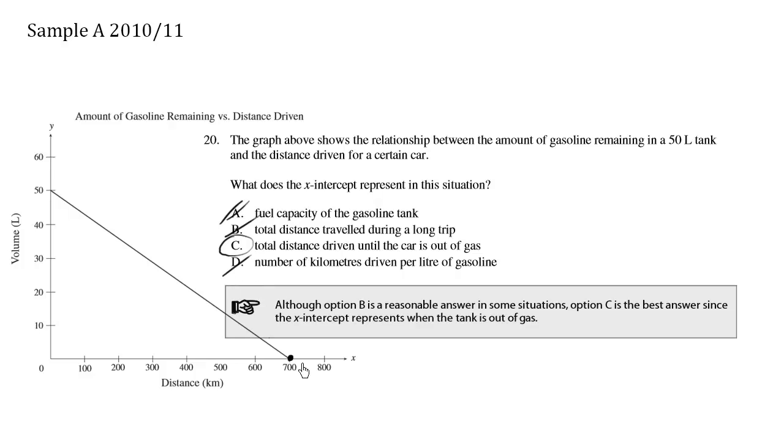We're interested in this intercept. When we hit this point, that's choice C, the total distance driven until the car is out of gas.